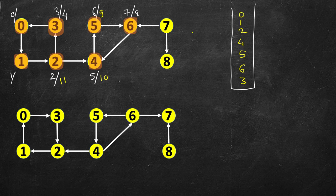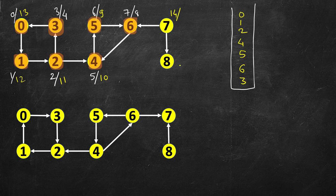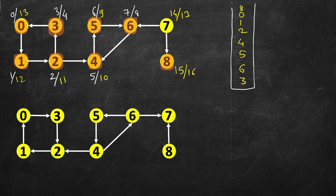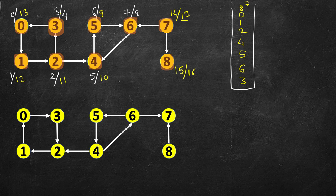All those vertices are visited, so next we pick vertex 7. From 7 we go to 8 at time 15; from 8 there is no place to go, so we return at time 16 and push 8 into the stack. Finally, no place to go from 7, so we push 7 into the stack. You can verify the largest finish time is 17, which belongs to vertex 7, and 7 is at the top of the stack. You could sort by finish times in reverse order instead of using a stack.